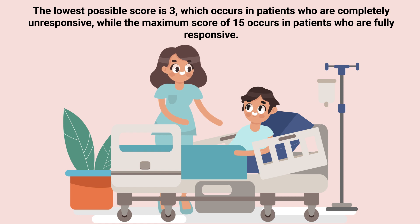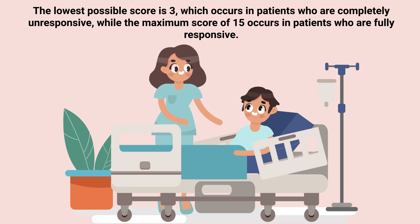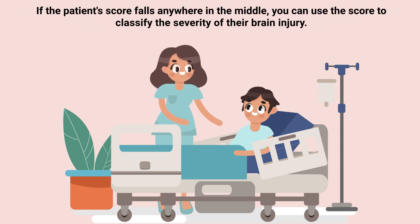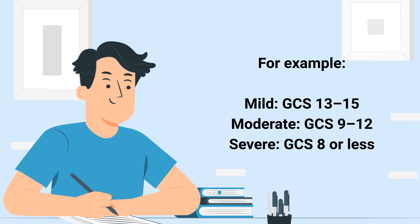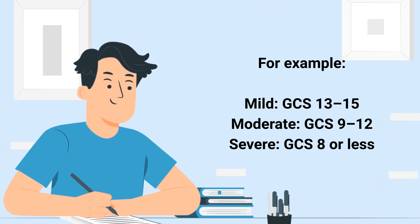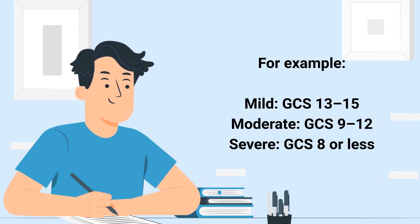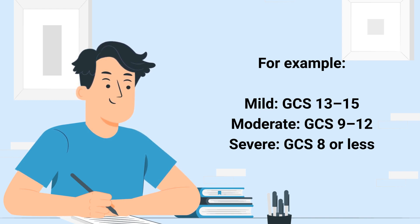The lowest possible score is three, which occurs in patients who are completely unresponsive, while the maximum score of 15 occurs in patients who are fully responsive. If the patient's score falls anywhere in the middle, you can use the score to classify the severity of their brain injury. A mild injury would get a Glasgow Coma Scale of 13 to 15, a moderate injury would have a score of 9 to 12, and a severe brain injury would have a score of 8 or less.